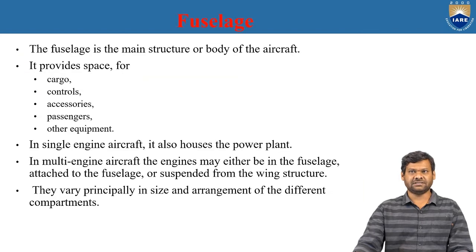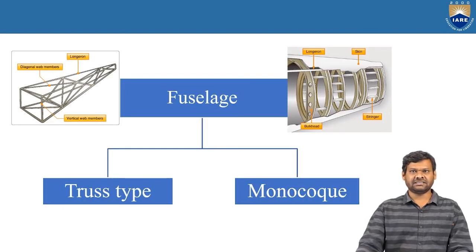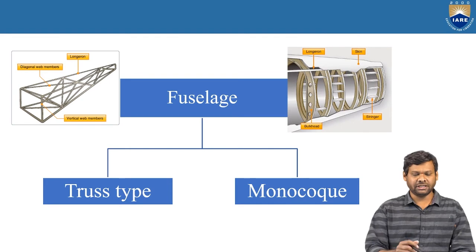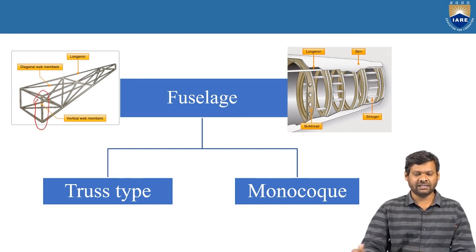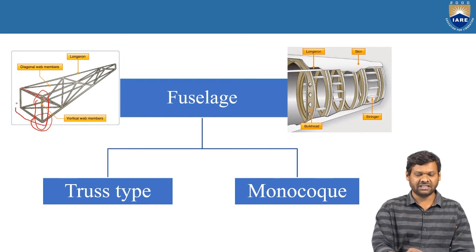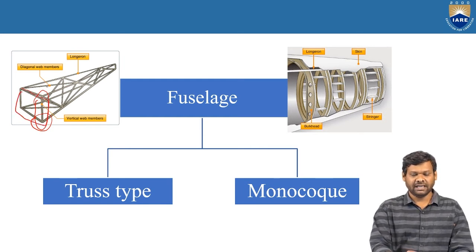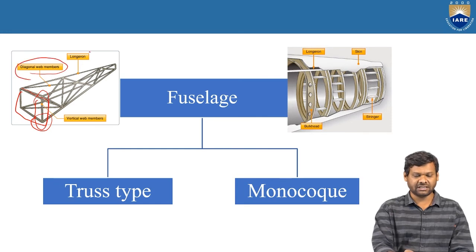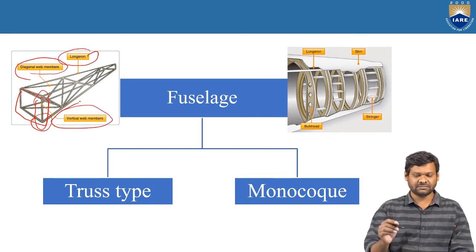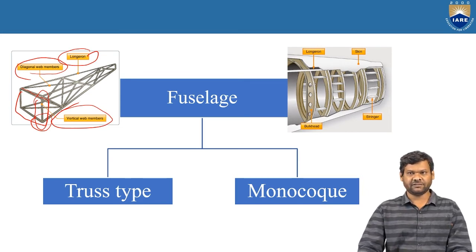Coming to the fuselage types, we have two types of fuselage construction: one is truss type and another is monocoque type. In the truss type, these are tubes welded to each other. As a result, a rectangular or square section is formed. These are the diagonal web members, these are longerons, and these are the vertical web members. This is one type of truss type construction, generally used in single engine aircraft.